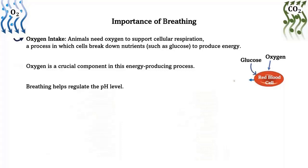supplying oxygen to cells and removing waste carbon dioxide generated during cellular metabolism. Importance of breathing — oxygen intake: animals need oxygen to support cellular respiration, a process in which cells break down nutrients such as glucose to produce energy. Oxygen is a crucial component in this energy-producing process. Breathing helps regulate the pH level and maintain internal stability in an organism in response to environmental changes. The pH balance is essential for the proper functioning of enzymes and metabolic processes.